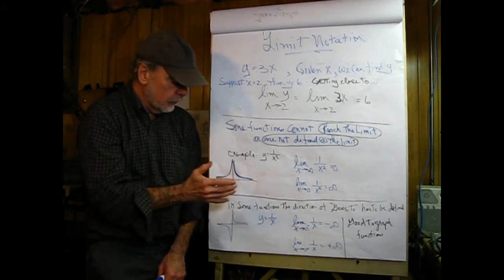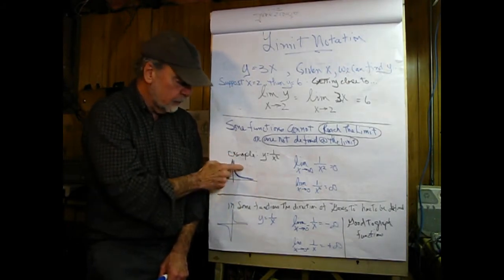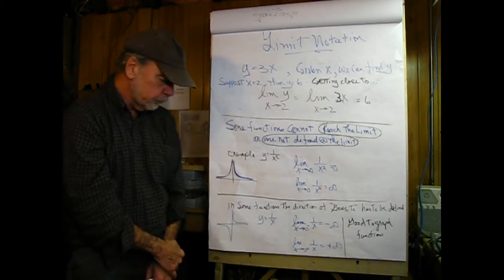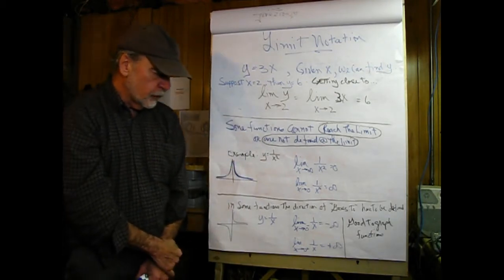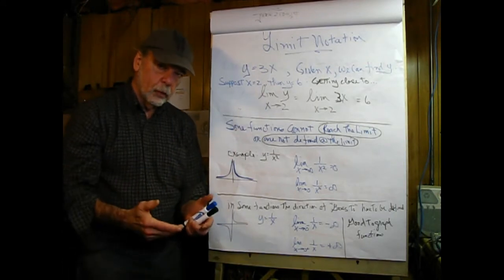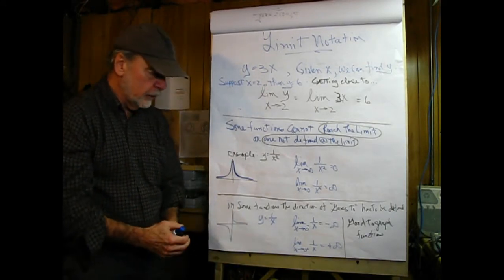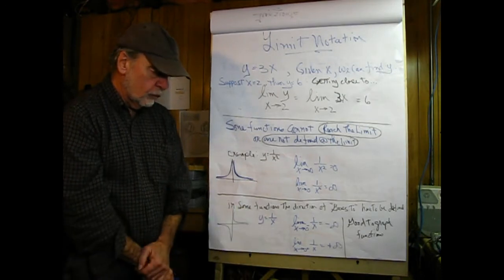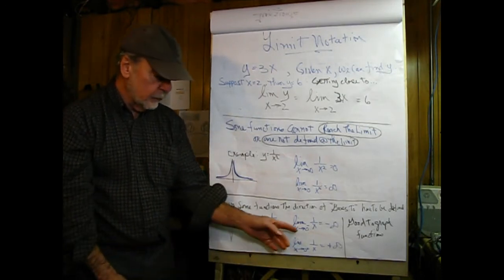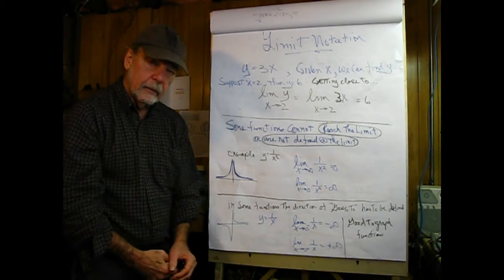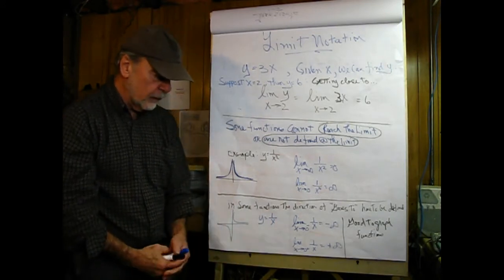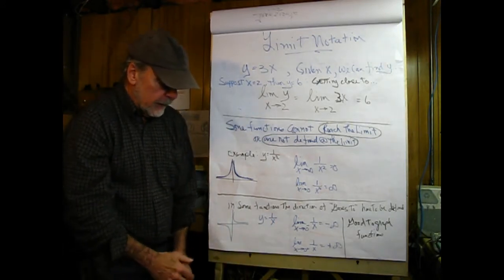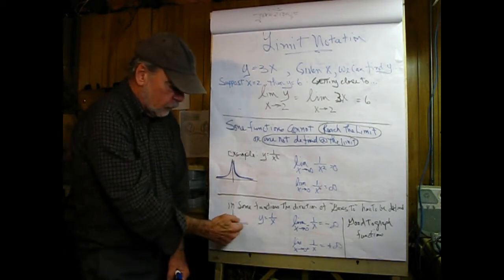We're going to be looking later at an electronic component that has a characteristic like this, only defined in quadrant 1. In some functions, the direction of the 'goes to' is very important. An example is the equation y equals 1 over x — taking the limit of that expression, it matters in which direction we approach the limit.